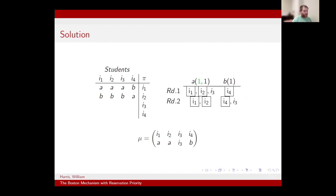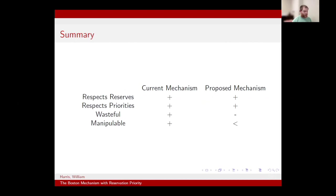I've highlighted two ways we evaluate the mechanisms in my paper, but we also look at whether mechanisms are respecting reserves and respecting priorities. Both mechanisms achieve this goal. However, the current mechanism is wasteful, while my proposed mechanism is not, because we've eliminated the second stage where that wastefulness arose. A downside is that both mechanisms are still manipulable. However, the mechanism I have proposed is less manipulable — meaning it's harder for students to gain an advantage from misreporting their preferences — which will hopefully result in a more equitable and fair assignment among all students.